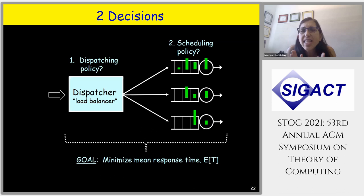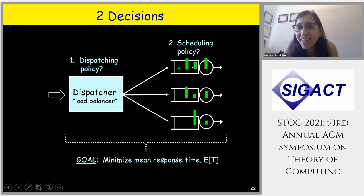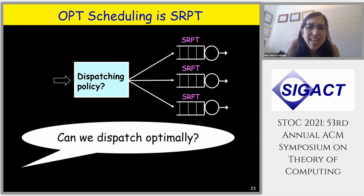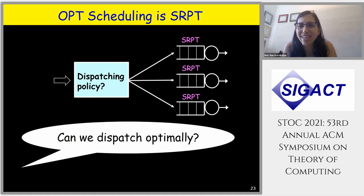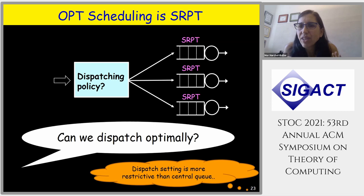We want to answer both questions to minimize mean response time. The second question is easy — once jobs are at a server, use SRPT, as established earlier. But the dispatching question remains: can we dispatch optimally? The dispatching setting is more restrictive than a central queue because you must decide immediately, so it's not obvious you can get anywhere near optimal.